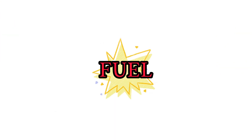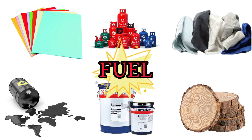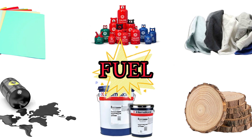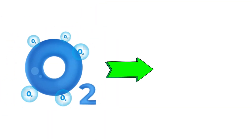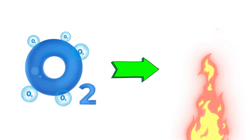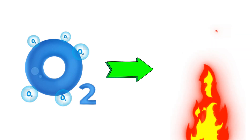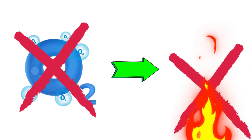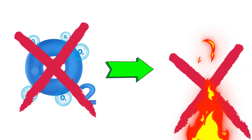Fuel is any substance that can burn — it can be anything from wood chips to gasoline. Without fuel, a fire cannot exist. Oxygen is a gas that is necessary for combustion; without oxygen, a fire cannot continue.